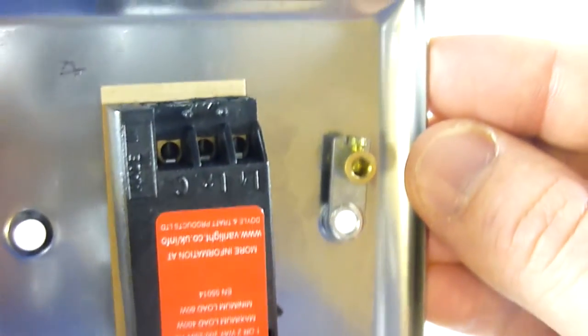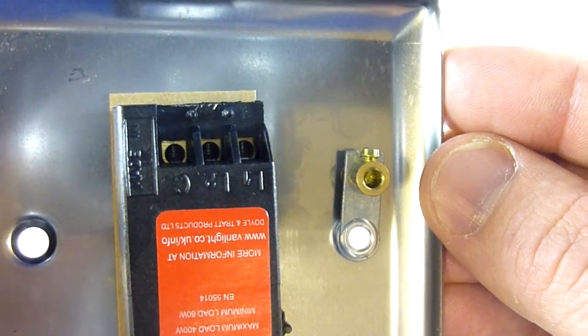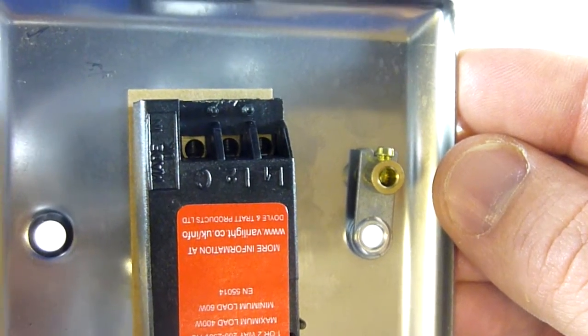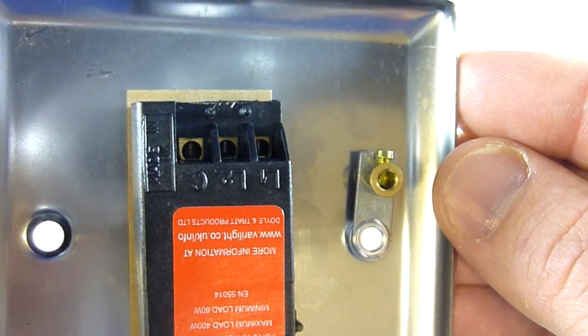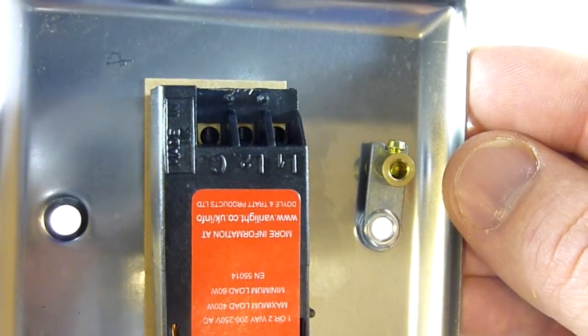Then on the back of the terminal block, if I just get that in focus for you there, you should be able to see L1, L2, and C connections. L2 connection won't be used in a one-way circuit. You just simply use the C and the L1 connections.